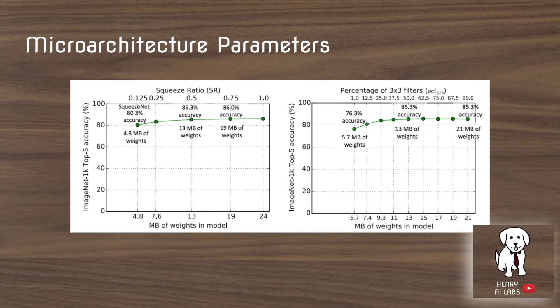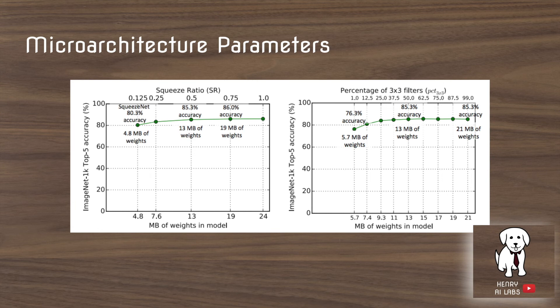The Fire module hyperparameters include the squeeze ratio and the ratio of E 1x1 to E 3x3 filters, which evolves from Fire module 1 through Fire module 9. The plot shows that when the squeeze ratio is 0.75, accuracy begins to saturate — meaning you wouldn't get a better result at 0.8, 0.9, or 1.0. A higher squeeze ratio also means more megabytes in the model. The right side shows the percentage of 3x3 filters relative to 1x1 filters in the Expand component.